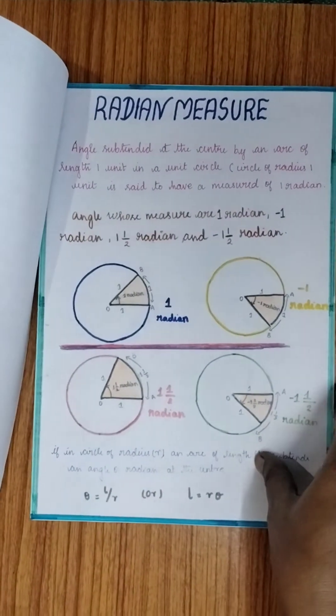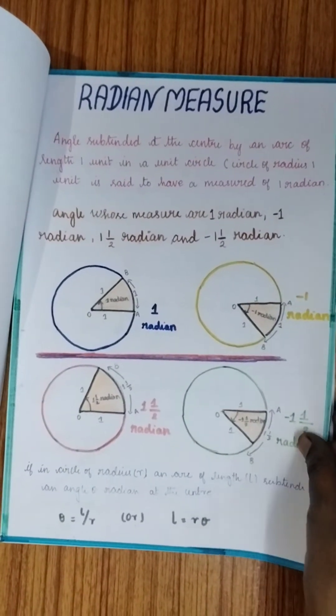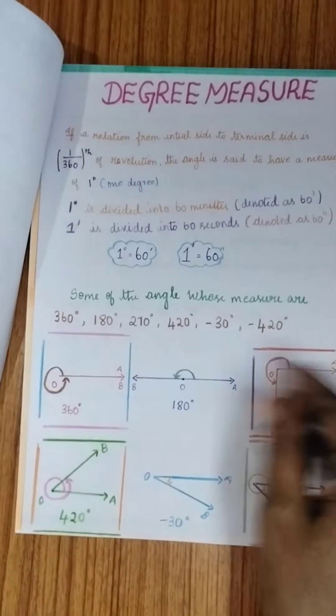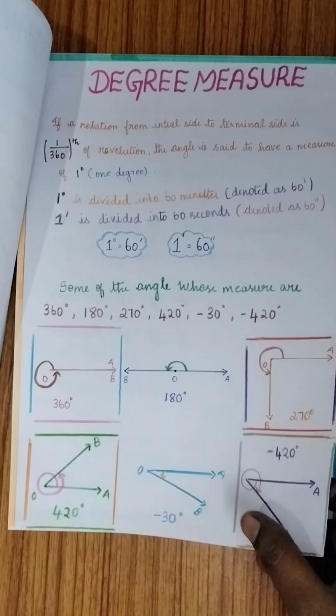On page 2 as it is there in our class 11 textbook, she has explained what is radian measure and what is degree measure with the relevant figures. The figures are all there in our textbook itself so you can just refer that.